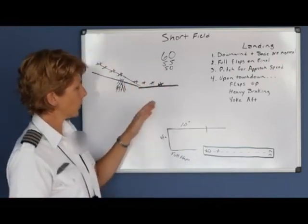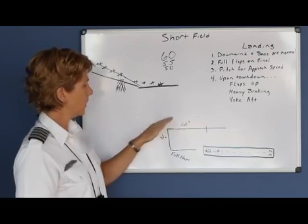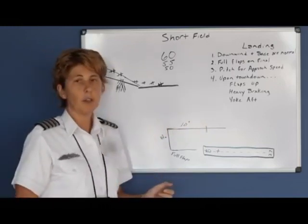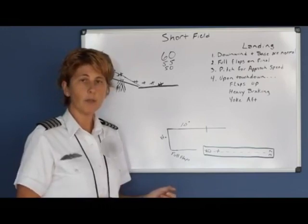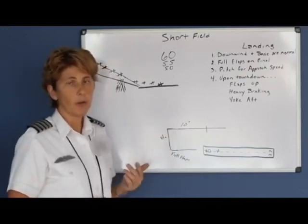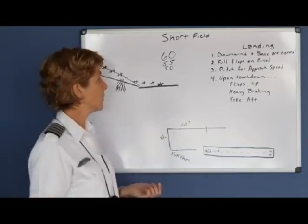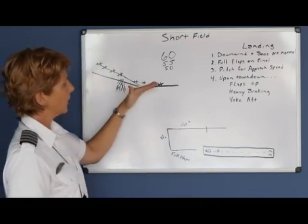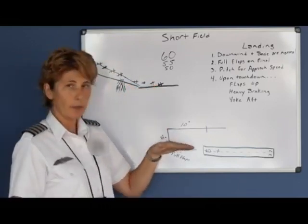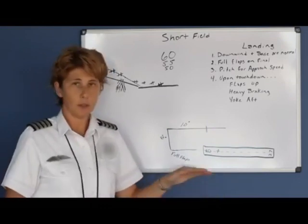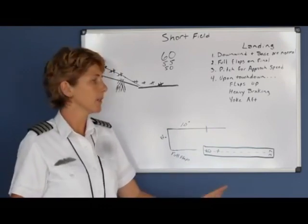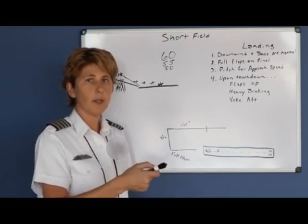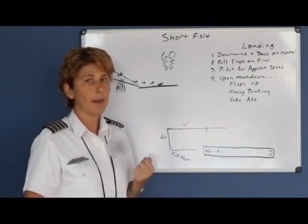To summarize a short field landing: your downwind and base are pretty much normal. As soon as you turn final, configure the airplane to full flaps and pitch for the approach speed specified in your POH, then maintain that speed on final. You may choose to round out a little early and allow the airplane to settle down through ground effect. Once you've landed: flaps up, heavy braking, and yoke back.